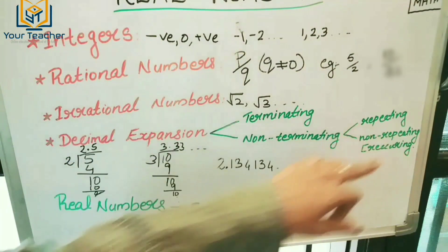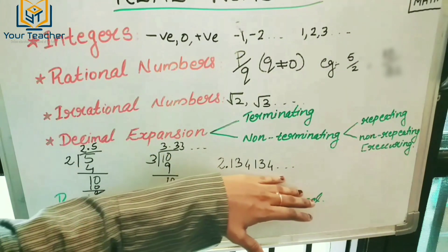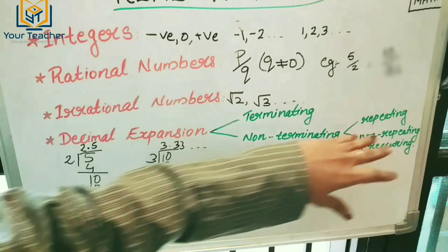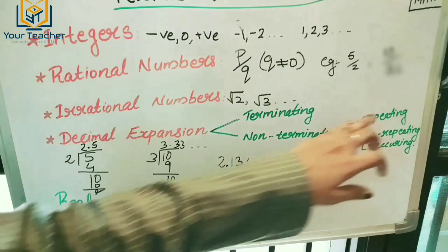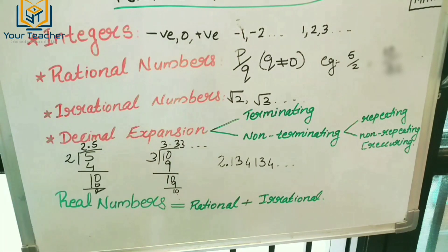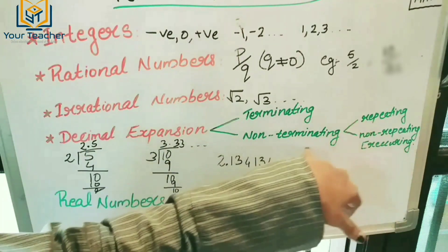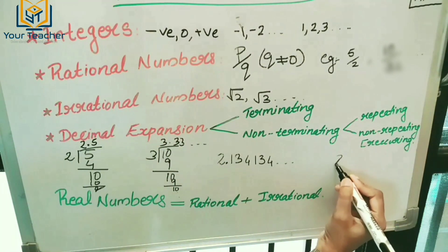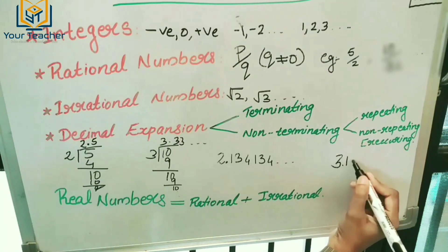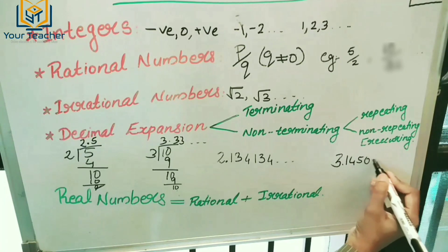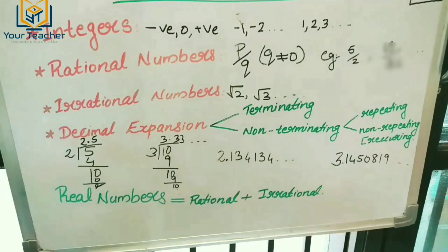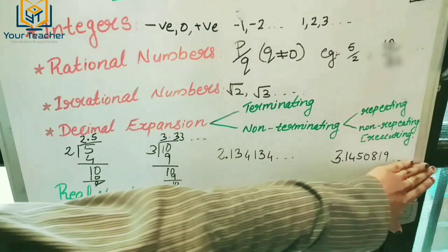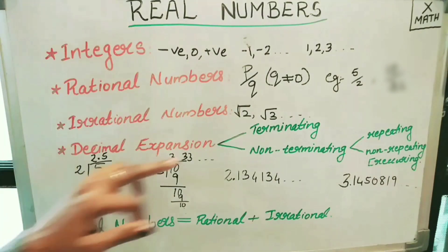That is repeating. We repeat the number in a regular interval — at the correct interval, we repeat the number in the decimal expansion. Non-repeating decimal expansion, on the other hand, does not repeat at a fixed interval — for example, 3.1450819... continues without a repeating pattern.